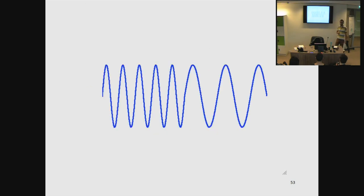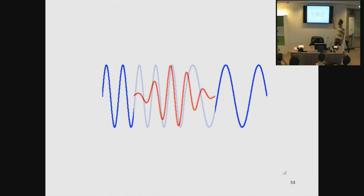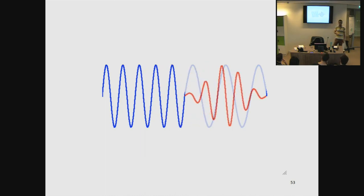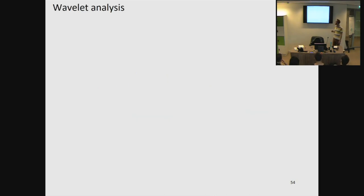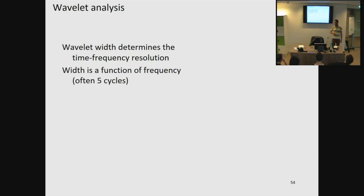Taking our signal and our first wavelet, at the beginning of the signal the wavelet matches up quite nicely, giving high correlations. As we move the wavelet further along, the match decreases and the correlation drops. In wavelet analysis, there is only one parameter we can specify: the width of our wavelet — the number of cycles that fit in the wavelet. Often five cycles is used, sometimes seven for higher frequencies and three for low frequencies. But there is no single golden rule.